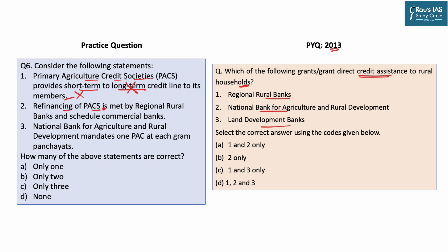Statement 2: refinancing of PACS is met by regional rural banks and scheduled commercial banks. This statement is also incorrect, because refinancing of these societies is done by NABARD — the National Bank for Agricultural and Rural Development. Statement 3: NABARD mandates one PACS at each gram panchayat. While NABARD is responsible for refinancing, it cannot mandate one primary agricultural credit society at each gram panchayat, as there are over 1 lakh gram panchayats in India that do not have any form of PACS. So the correct answer is option D — none of the above are correct. The answer to the UPSC's question is option C, that is 1 and 3.